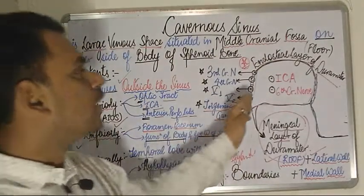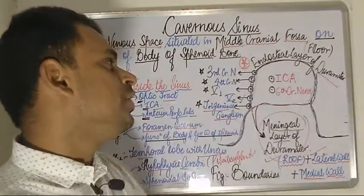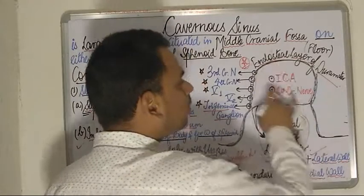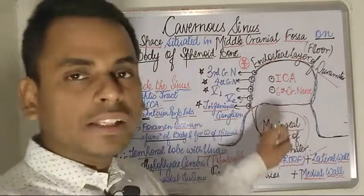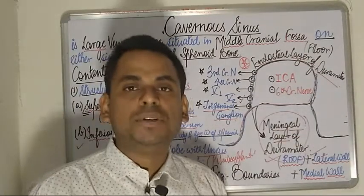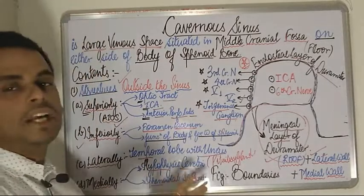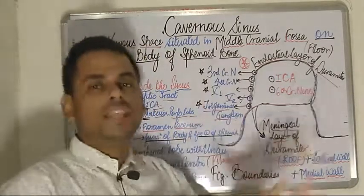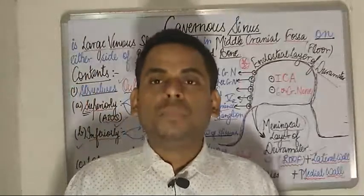Moving on to the structures passing through the center of the cavernous sinus — only two structures pass through the center: the internal carotid artery and the sixth cranial nerve, that is the abducent nerve. This concludes the short discussion about the contents and boundaries of the cavernous sinus, which is a paired dural venous sinus.